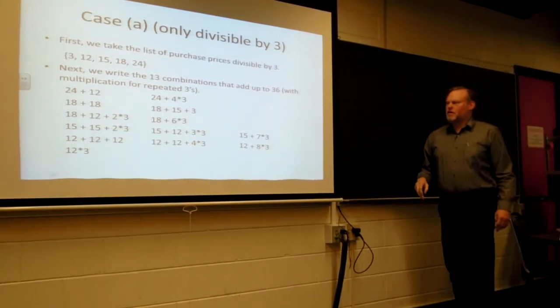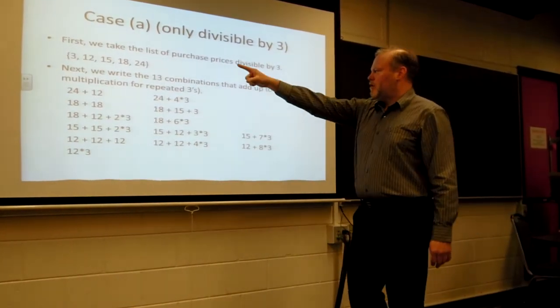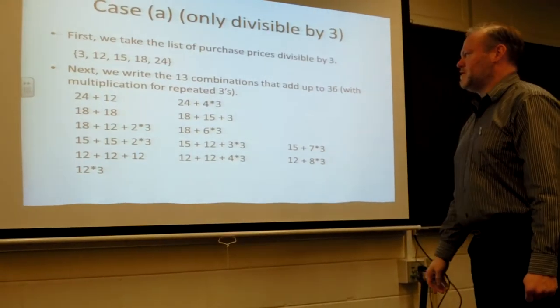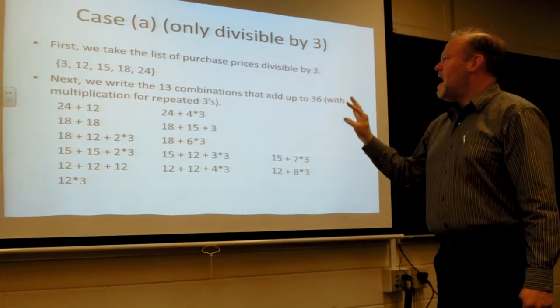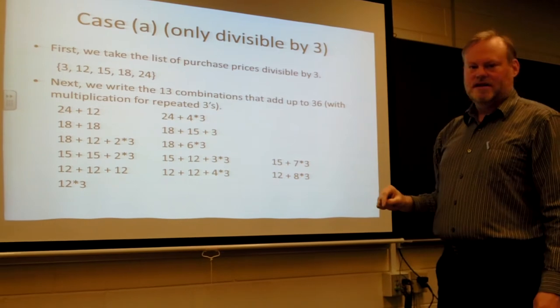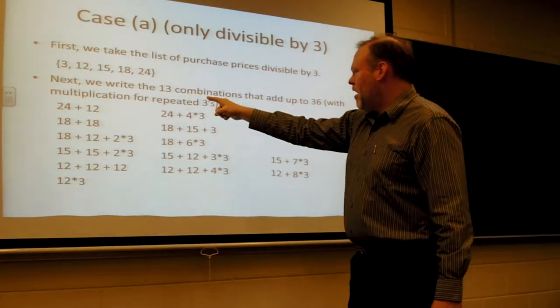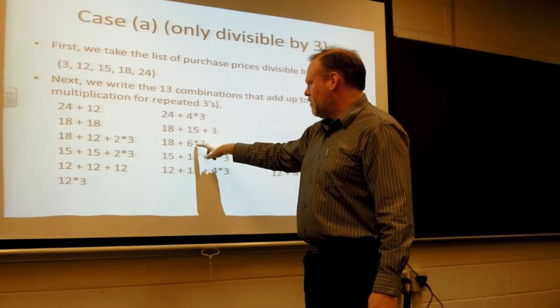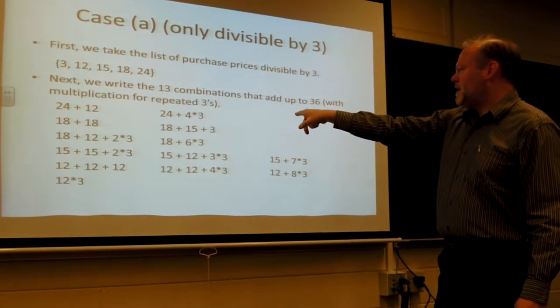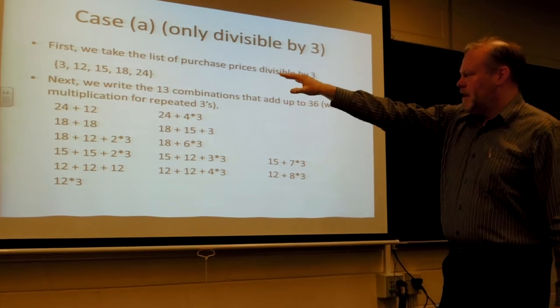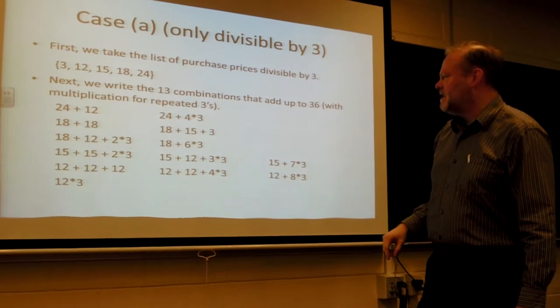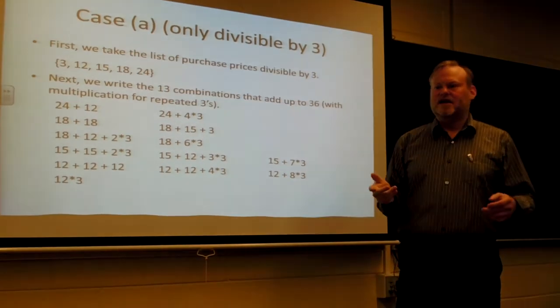Case A, only divisible by three. Here's the list of possible prices, which are multiples of three. We ask, how can you add up numbers from this list for the sum to be 36? Here are the possible ways, and note the stars here for multiplication, which is just repeated addition. There are 13 ways for you to sum numbers from that set to get the sum of 36.